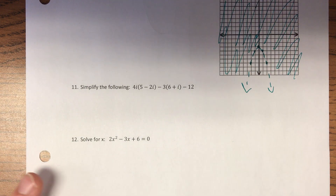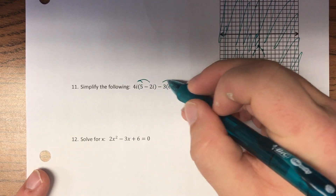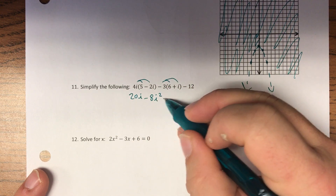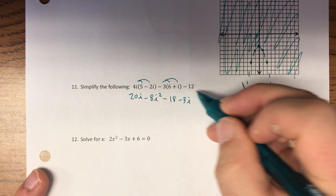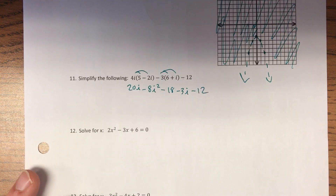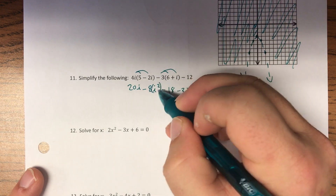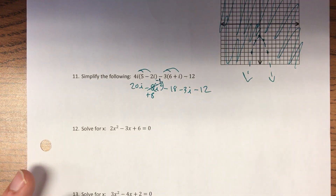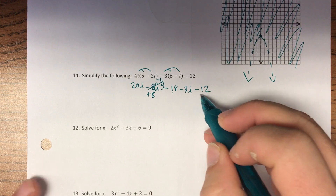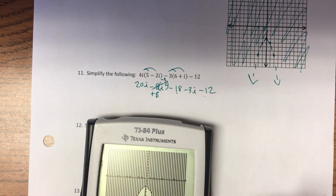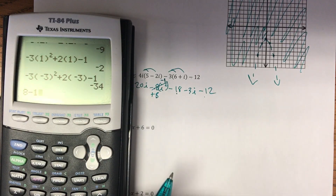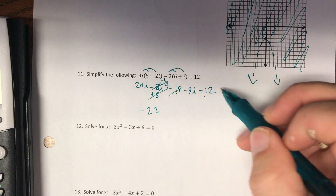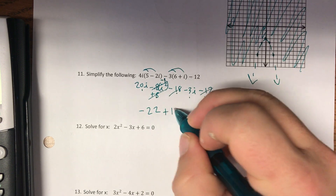Number eleven — I'm just going to distribute and then combine like terms. We get 20i − 8i² − 18 − 3i − 12. Any time you see i², that's equivalent to −1, which changes −8i² to positive 8. Combining real parts: 8 − 18 − 12 = −22. Combining imaginary parts: 20i − 3i = 17i. Answer: −22 + 17i.